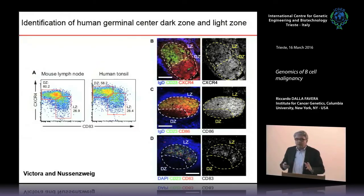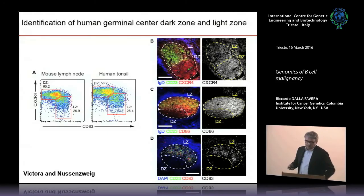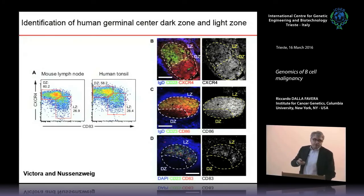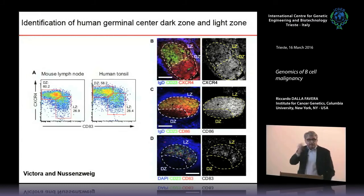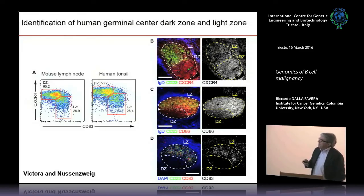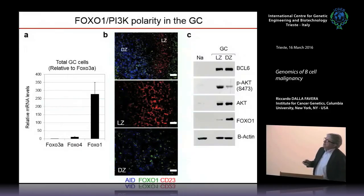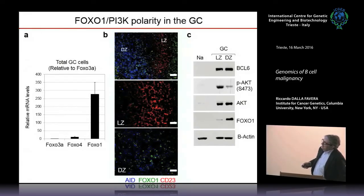We first studied what FOXO1 does in normal germinal center cells, helped by work from Michel Nussenzweig's lab at Rockefeller which identified markers allowing flow cytometric purification of the two subsets of germinal centers: the light zone and the dark zone. FOXO1 is the only family member expressed in germinal center cells. In the dark zone — the first phase of the germinal center — FOXO1 is present in the nucleus. Whereas in the light zone, it is essentially gone. This is the first relationship with PI3 kinase signaling: in the dark zone, BCL-6 is expressed, phospho-AKT is barely visible, and there is a lot of FOXO1. Moving to the light zone, AKT is now phosphorylated, PI3 kinase is active, and FOXO1 is essentially gone.